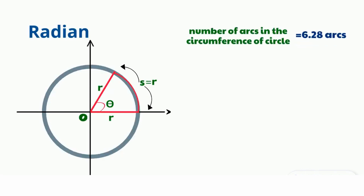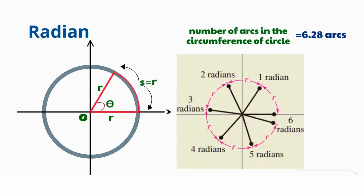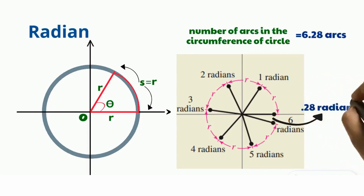That means there are 6.28 radians in a circle. See this picture — radians 1 through 6, then 0.28 radians also, totaling 6.28 radians in a circle. One way to measure an angle is in radians; another way is in degrees.